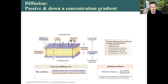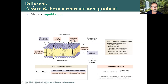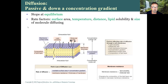One of the essay topics will be Fick's Law of Diffusion, so take detailed notes. Diffusion stops at equilibrium — when there are equal amounts of material on both sides of the membrane. At equilibrium, particles still move across but in equal amounts in and out. Factors affecting diffusion rate include surface area, temperature, distance or thickness of membrane, lipid solubility, and size of molecule diffusing.